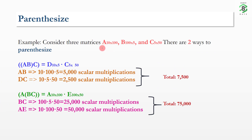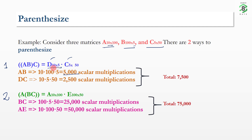Consider three matrices A, B, and C with given orders. These three matrices can be multiplied in two different ways. In way one, we multiply A and B first, requiring 10×100×5 = 5,000 scalar multiplications. The resultant matrix AB has order 10×5. Then multiplying AB with C requires 10×5×50 = 2,500 scalar multiplications. So the total for way one is 5,000 + 2,500 = 7,500 scalar multiplications.